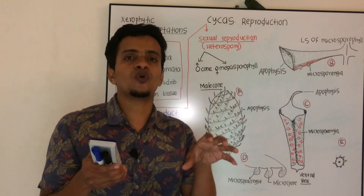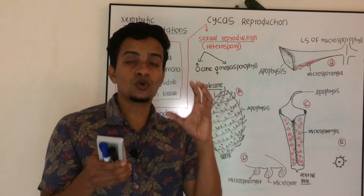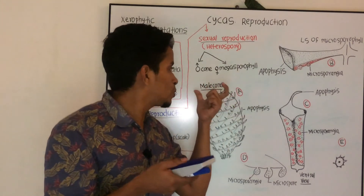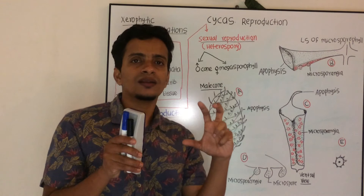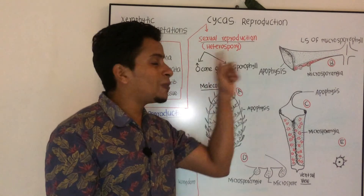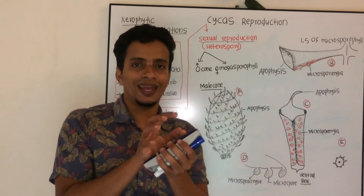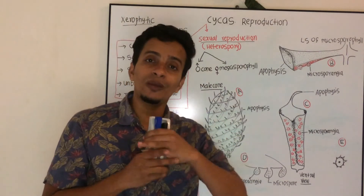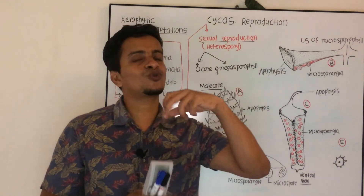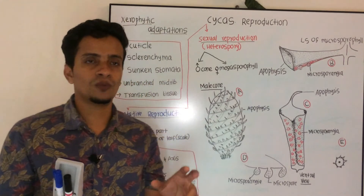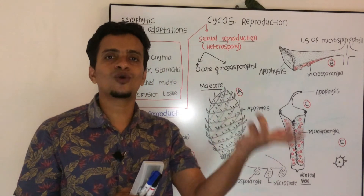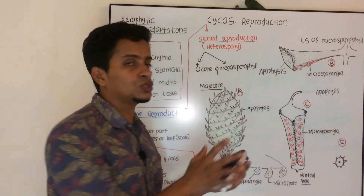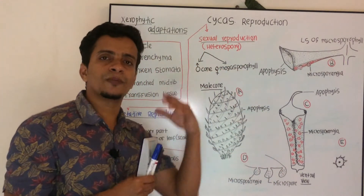The microsporophylls aggregate to form a cone-like structure — you can see male cones in the case of Cycas. Megasporophylls, however, will not aggregate; they remain in a loosely arranged form. So the female plant does not form a compact cone — female cones are absent in Cycas.